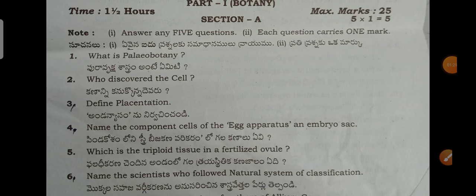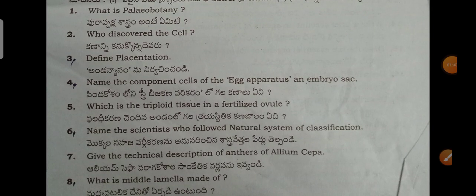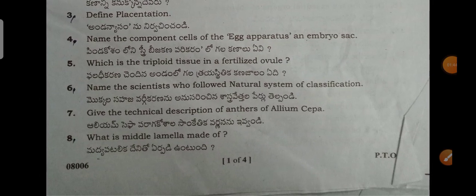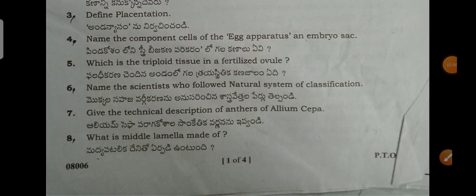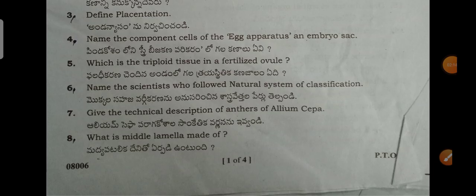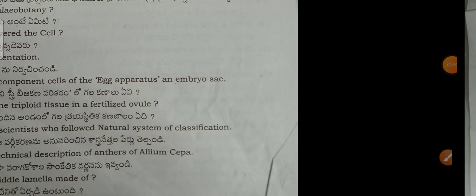This is the first question: What is botany? Who discovered the cell? Define placenta. Name the component cells of the egg apparatus and embryo sac. Which is a triploid tissue in a fertilized ovule? Name the scientist who followed the natural systems of classification. Give the technical description of anthers of Allium cepa. What is middle lamella made of?